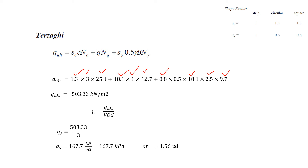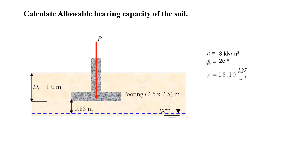After putting in all the values, q_ultimate = 503.33 kN/m². To get the safe or allowable bearing capacity, we divide q_ultimate by the factor of safety, which is chosen as 3. Therefore, the allowable bearing capacity = 167.7 kN/m² (or 167.7 kPa). Converting to FPS units: 167.7 kPa ≈ 1.56 tonnes per square foot (since 1 t/ft² ≈ 95 kPa).